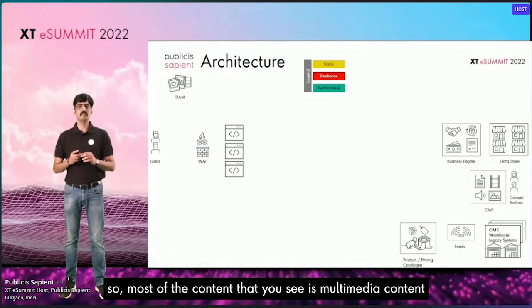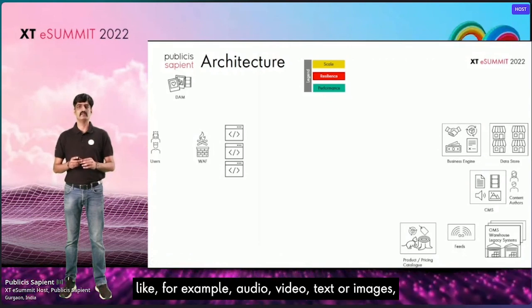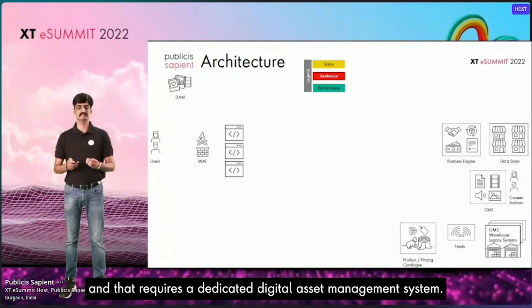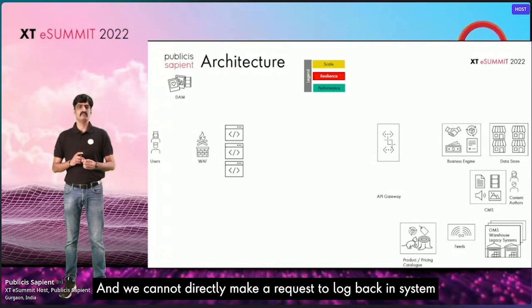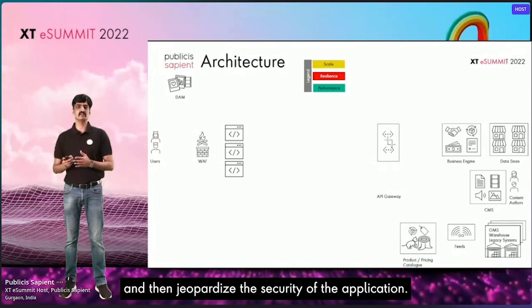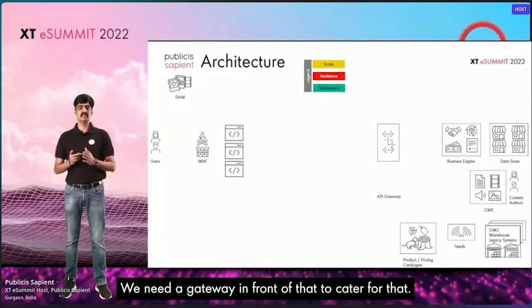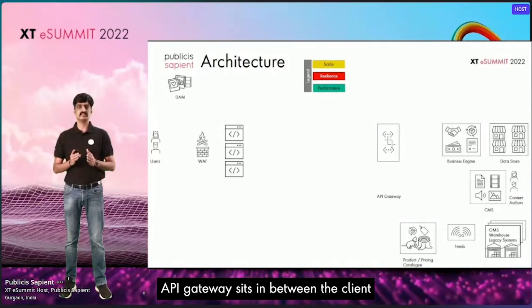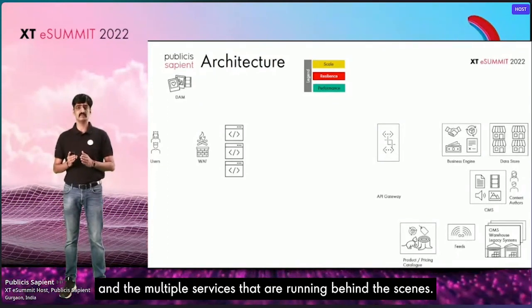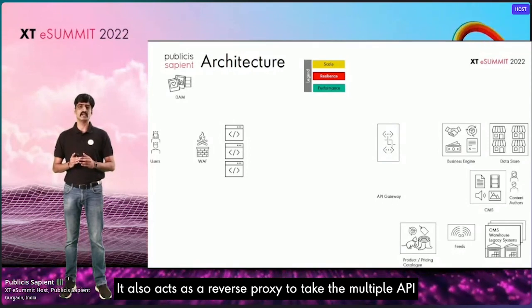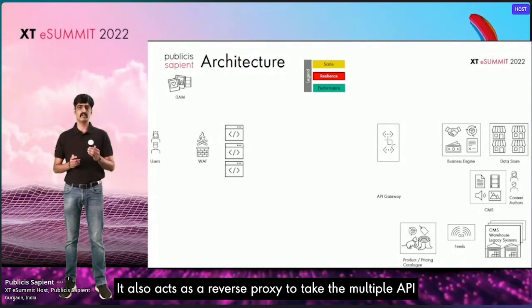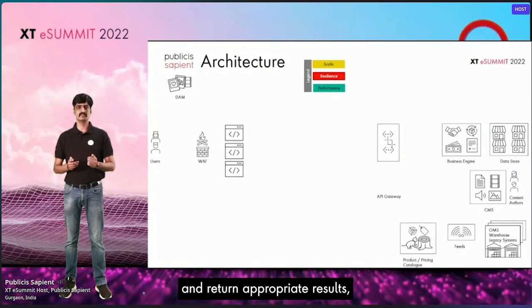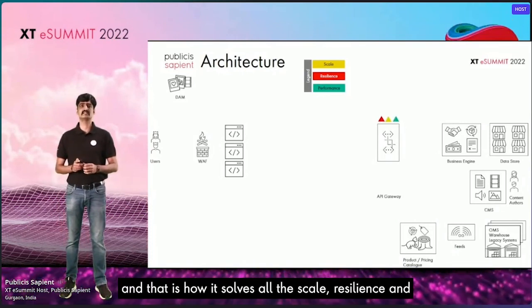Most of the content you see is multimedia — audio, video, text, or images — and that requires a dedicated digital asset management system. We cannot directly make requests to your backend system and jeopardize security; we need a gateway in front of that. The API gateway sits between the client and multiple services running behind the scenes. It also acts as a reverse proxy to take multiple API request calls, aggregate or orchestrate those services, and return appropriate results. That's how it solves the scale, resilience, and performance issues.